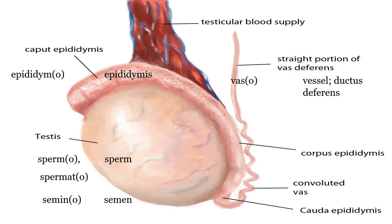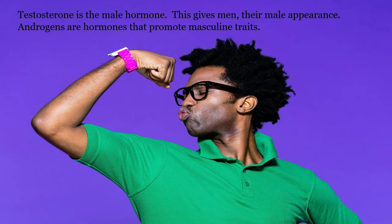For a close-up of the testes: epididymo refers to the epididymis. Vaso refers to the vas deferens. When the vas deferens are cut this is a vasectomy. Spermo and spermato both refer to sperm. Semino refers to semen. Testosterone is the primary male androgen — the hormone that makes humans look like men. We are all by default female sex until the Y chromosome causes testosterone to produce male characteristics.